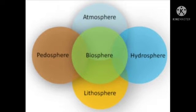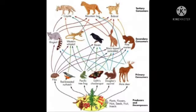Water is found as liquid in oceans, rivers, lakes, ponds, and underground water. As water vapor, it is present in the atmosphere. These three forms keep on changing from one to another in a constant movement called the water cycle.